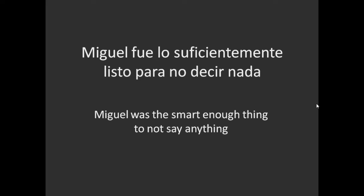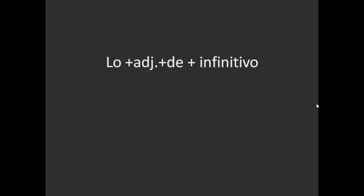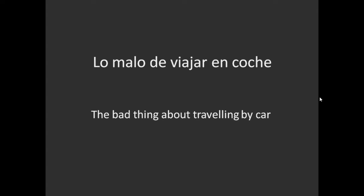Another popular construction can be 'lo' plus adjective plus 'de' plus infinitive, which in English translates as 'the' plus adjective plus 'thing about' plus the gerund. For example: 'lo malo de viajar en coche' would be 'the bad thing about traveling by car'.